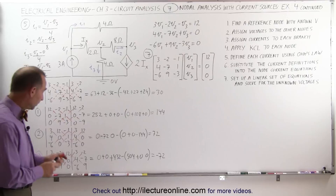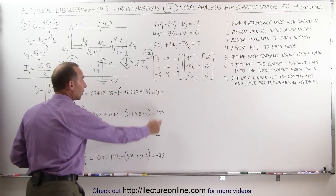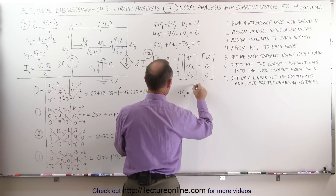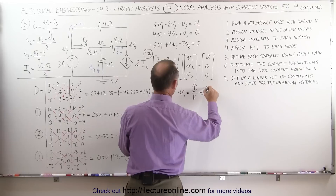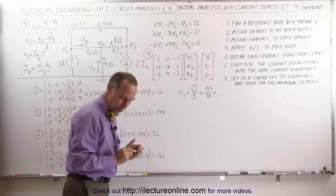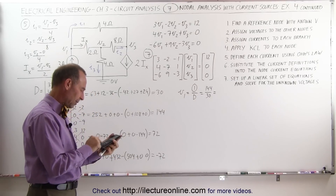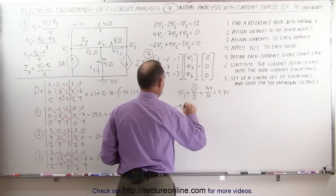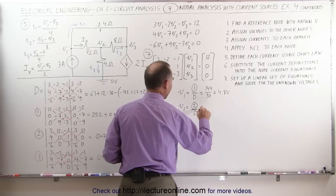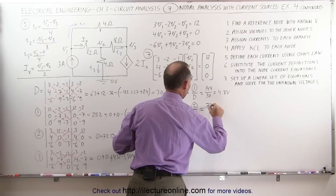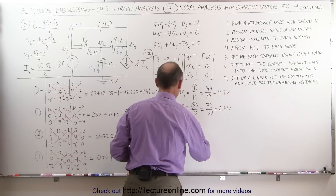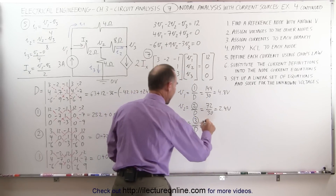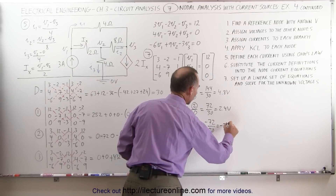Now I'm ready to find the voltages by dividing each matrix determinant by the main determinant D. V1 equals 144 divided by 30, which is 4.8 volts. V2 equals positive 72 divided by 30, which is 2.4 volts. And V3 equals negative 72 divided by 30, which is negative 2.4 volts.